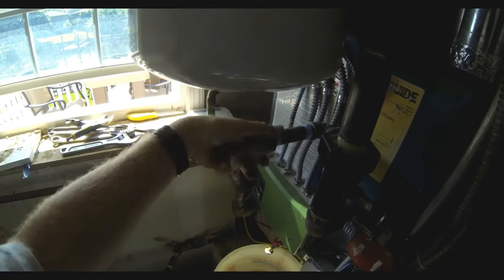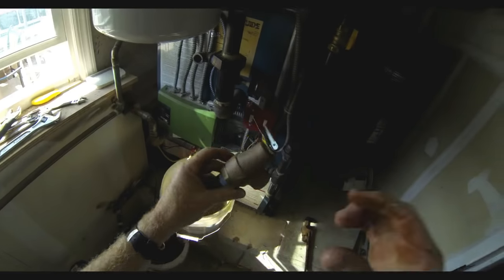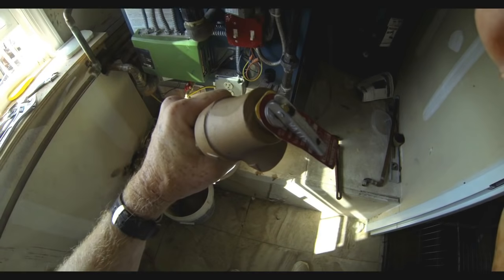The overpressure relief valve just screws off. You will need to pick up some Teflon tape in addition to the valve and the expansion tank.